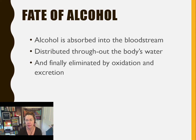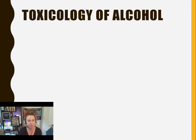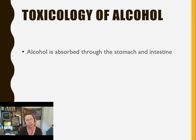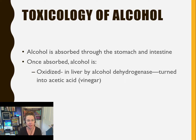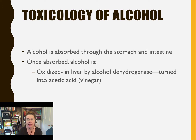Alcohol is eliminated through both oxidation in the liver using alcohol dehydrogenase, and excretion in the sweat and the breath. Alcohol is initially absorbed through your stomach and intestines, then oxidized in the liver by alcohol dehydrogenase, which seeks to turn the alcohol into a less toxic form — acetic acid, or vinegar — because that is less toxic to the body than the alcohol.